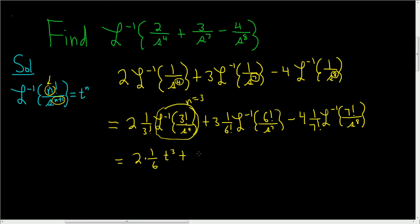Plus 3 times 1 over 6 factorial. And I believe 6 factorial is 720. Let me check really quick. Yep, it's 720. And then this piece here, the n is 6, so it's going to be t to the 6th.